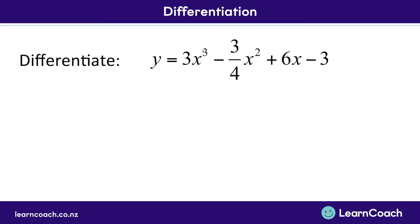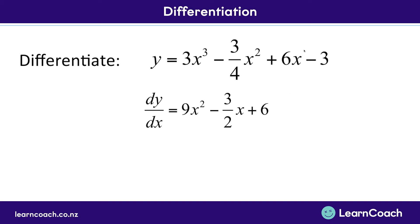Now let's look at a question. We have y equals 3x to the power of 3, minus 3 quarters x squared, plus 6x, minus 3. To differentiate: 3 times 3 gives 9x squared; for the 3 over 4 x squared term, multiply 3 over 4 by 2 and reduce the power to get 3 over 2 x; plus 6x differentiates to just 6 since x cancels out; and minus 3 disappears. So dy by dx equals 9x squared minus 3 over 2 x plus 6. This could equally be written in f of x notation as f dash x. That is how you differentiate a function.